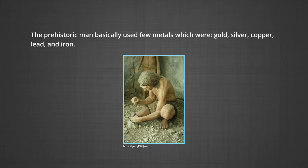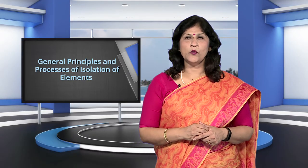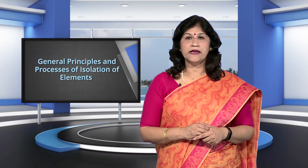Since the discovery of copper, the metallurgical knowledge of the ancient man developed over thousands of years to investigate and understand the nature and use of the available native metal. The prehistoric man basically used metals which were gold, silver, copper, lead and iron. Over the years, the metallurgical knowledge evolved from an art to a science. The advancements in the knowledge of metallurgical processes became synonymous with the development of civilization.